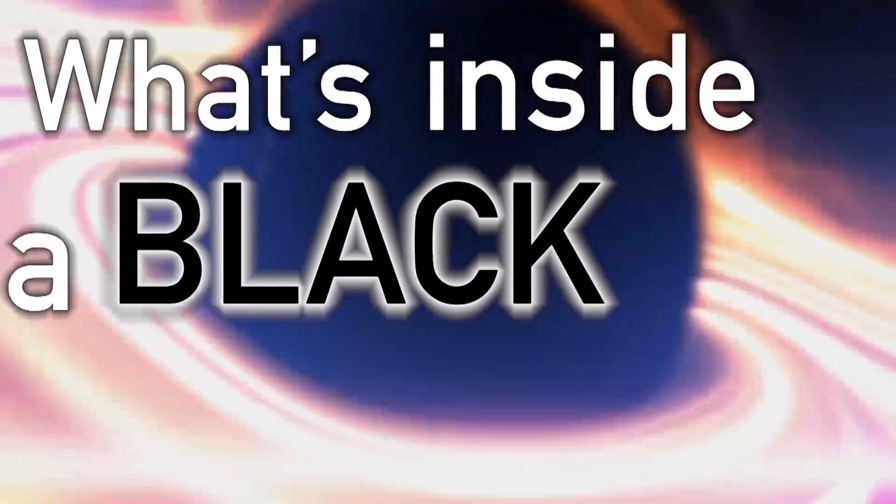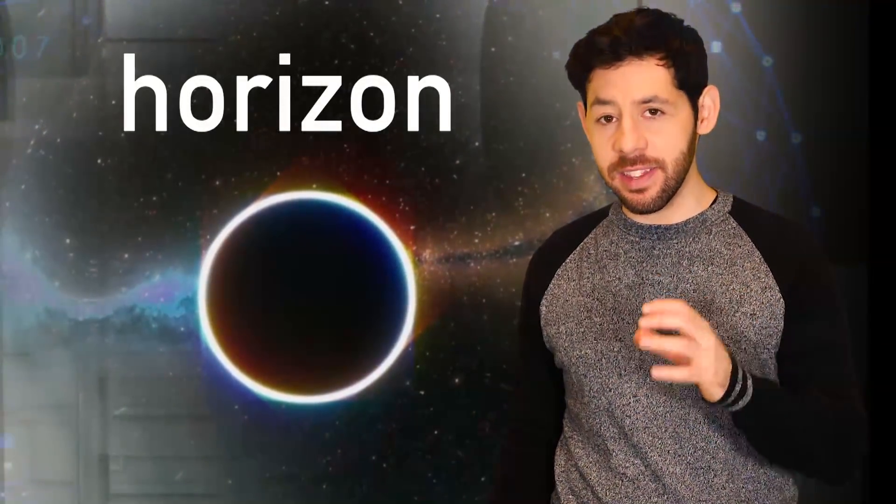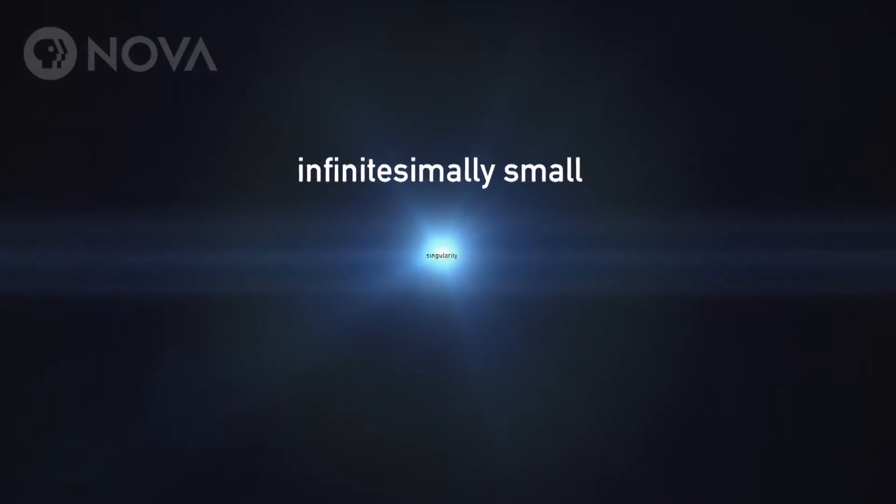What's inside a black hole? You may have heard there's a smooth surface called the horizon, out of which nothing can escape. You may have also heard there's something called a singularity at the center of a black hole where everything is crushed into an infinitesimally small, infinitely dense point.